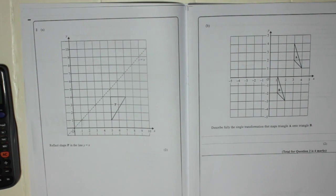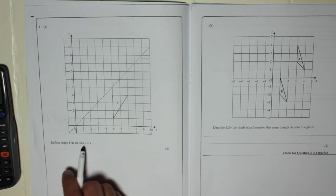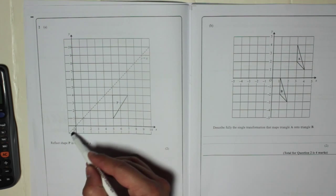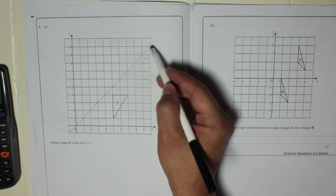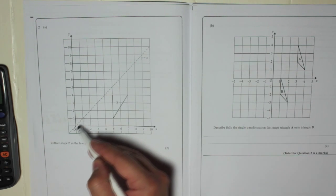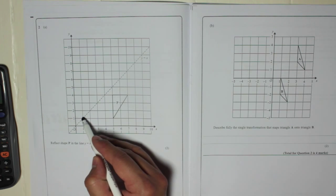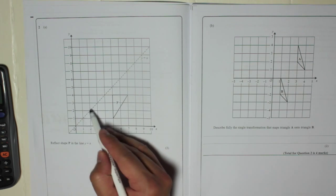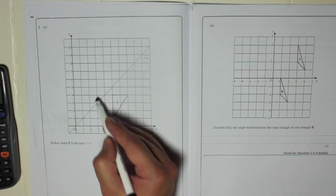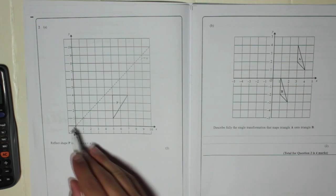Question two a: reflect shape p in the line y equals x. This is the line y equals x. Remember, the reason it's called y equals x is because everywhere on the line the y coordinate is equal to the x coordinate. One one, two two, three three, or three three again, along the corridor up the stairs.